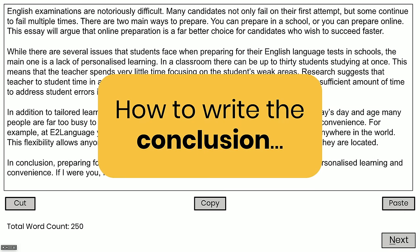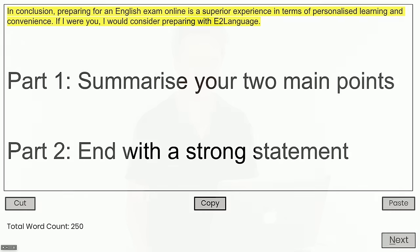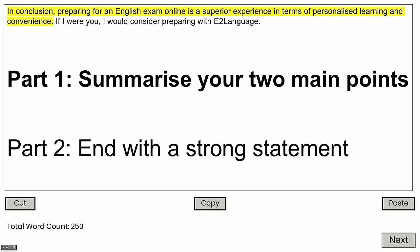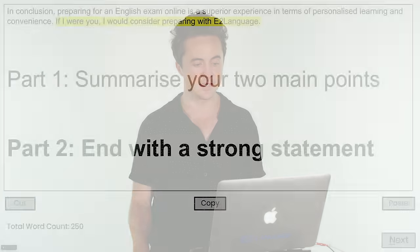Let's look at how to write the conclusion. The conclusion will have two parts. First, we're going to summarize those two main points. Then we're going to end with a strong statement. So: 'In conclusion, preparing for an English exam online is a superior experience in terms of personalized learning and convenience.' I've given my opinion again — my opinion is throughout the entire essay: in the intro, in each paragraph, and in the conclusion. It's a strong argumentative essay. Then end with a strong, punchy statement. As for using personal pronouns like 'I,' that's completely fine — just don't overdo it.